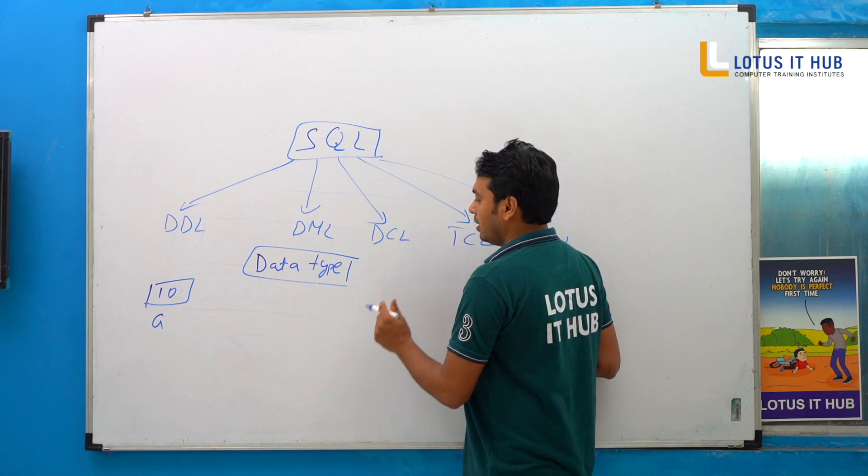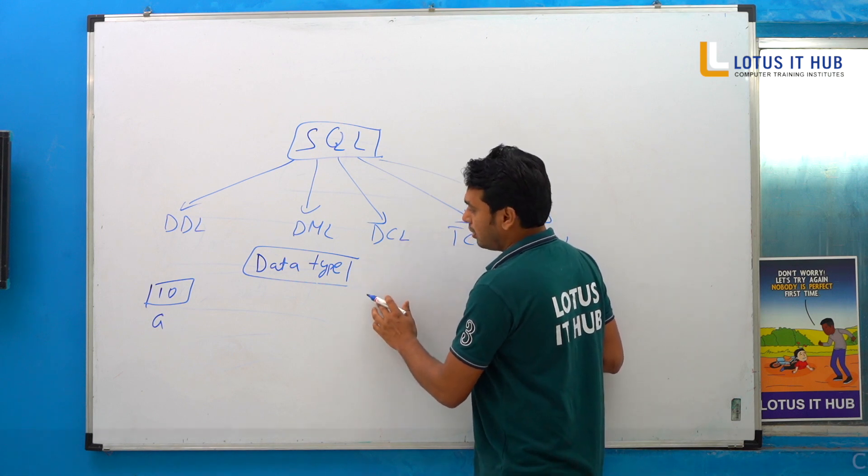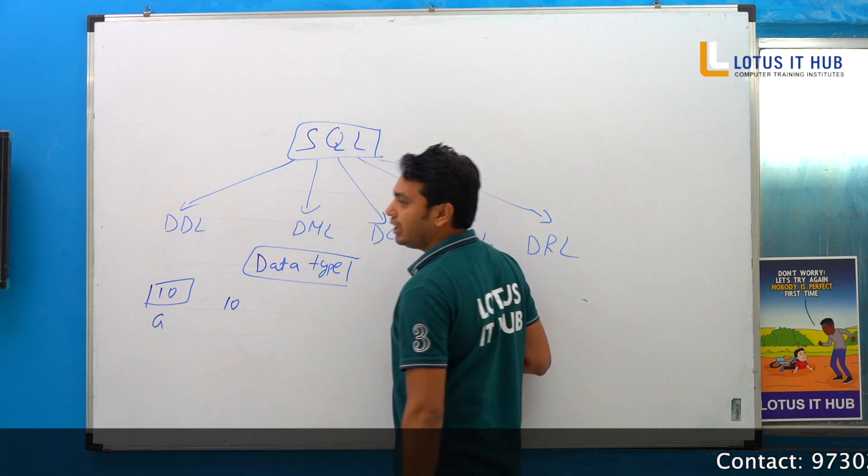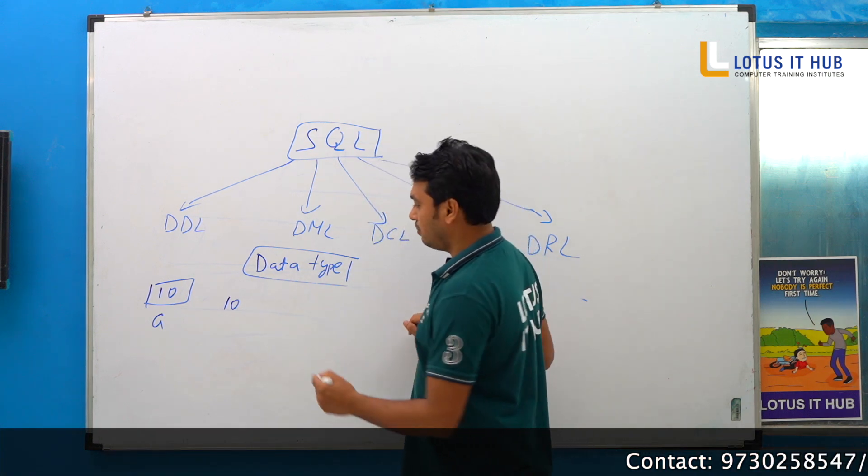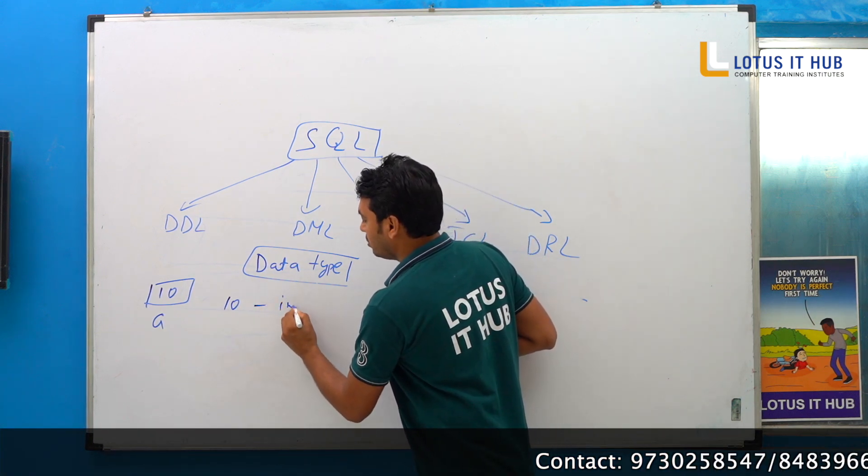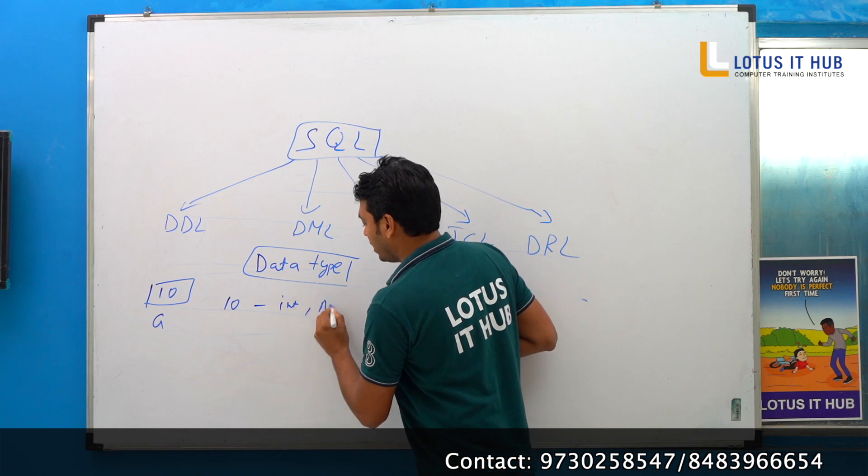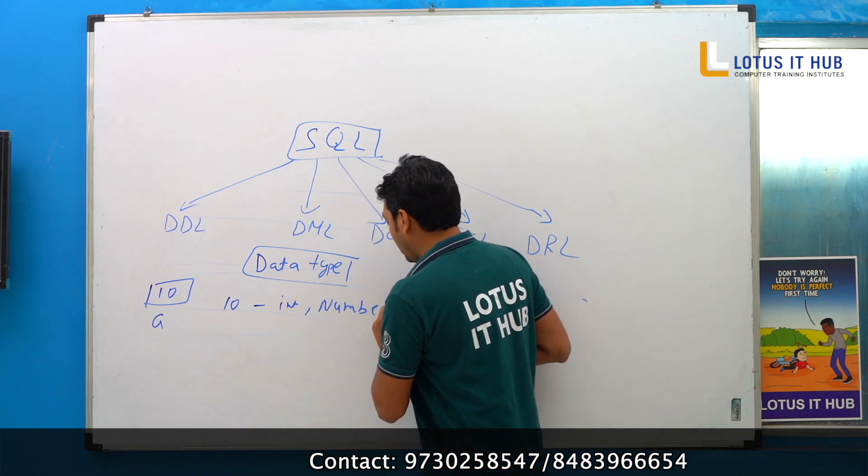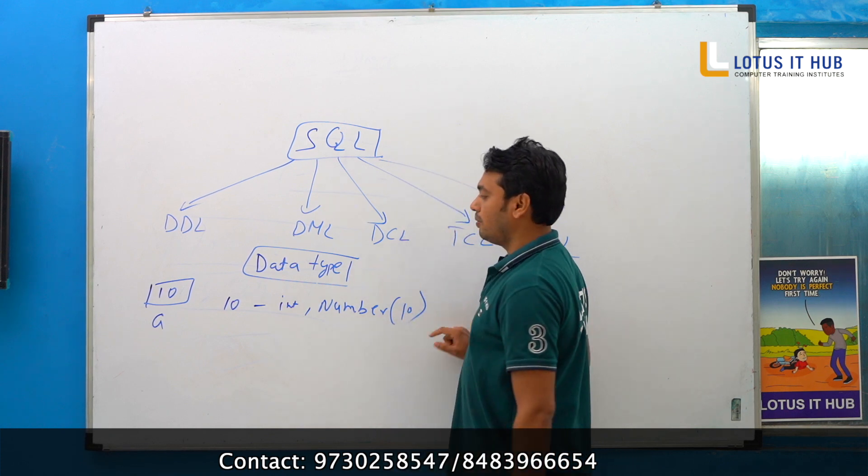Next, data type. Look, how many data types are in SQL? Suppose whenever I want to store any 10, 10 is a non-decimal number, correct. Either I can use int data type, number data type, and anything we can use.